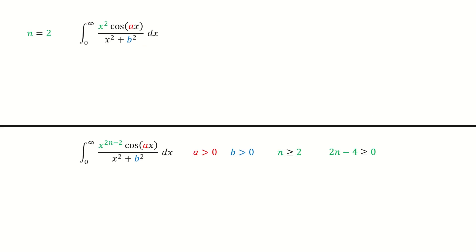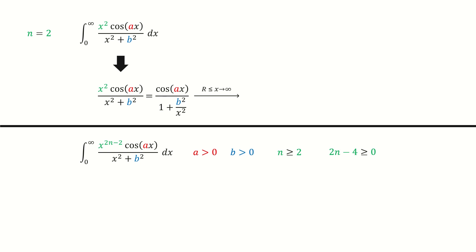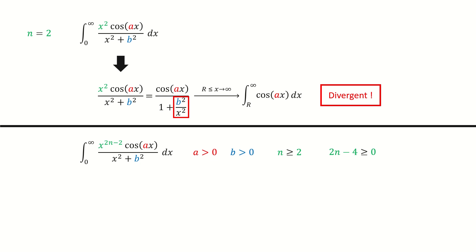Now let's analyze this integral by a simpler method, which we will use to deal with the general case later. First, we take the integral function and divide x² on both numerator and denominator. Now we let x be sufficiently large — for example, we set capital R equal to 1 million times b. In this case, this term will be very close to 0 and we can ignore it. So the integral function goes to this form, and then we do the integration. So obviously it's divergent — this integral is divergent for n equals 2.